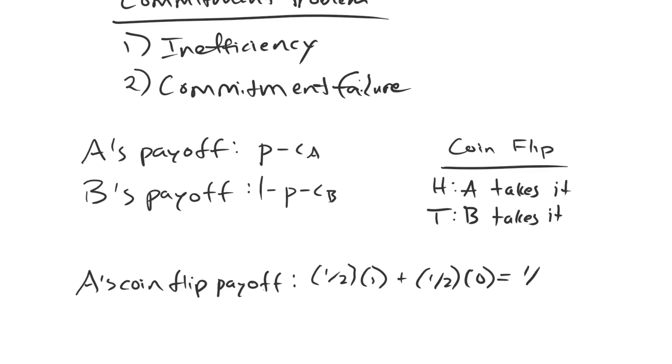So its payoff is equal to one-half, which again is equal to P. And you can see going up to here that this payoff for P is better than fighting a war because it is getting what it expects to get by fighting a war, but it is not having to pay the cost associated with fighting. So A is better off as a consequence.